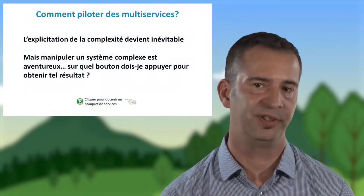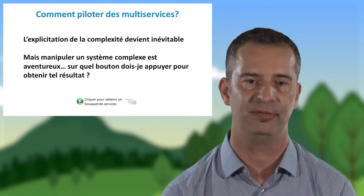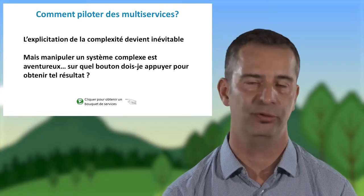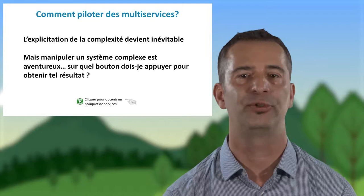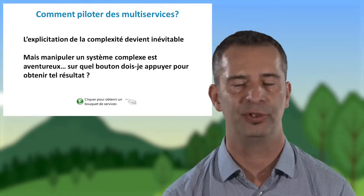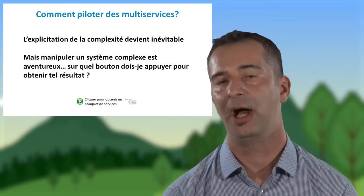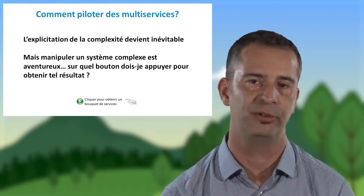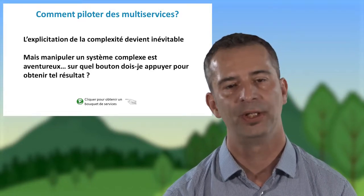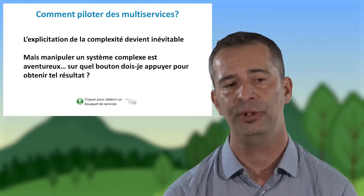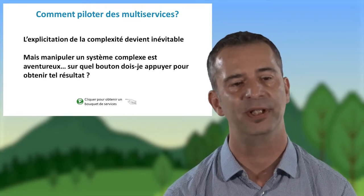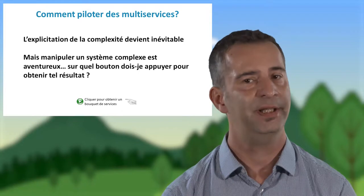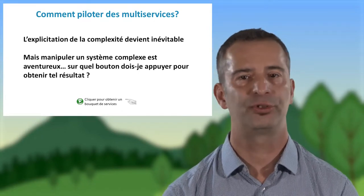Pour répondre à la question comment piloter ces services, et en particulier comment piloter plusieurs services — donc des multiservices — deux réponses importantes. Il faut expliciter la complexité, qui est absolument inévitable : complexité d'écosystèmes diversifiés, de leurs composantes, et des services fournis, en particulier certains services parfois ignorés. Un bon exemple est le sol : à part pour les agroécosystèmes, il est très souvent ignoré, alors que les services associés, comme le stockage de carbone, sont importants. Il faut également identifier les seuils et compromis entre services, mais aussi entre services et disservices — quelque chose de négatif. Un bon exemple sont les arbres en ville.